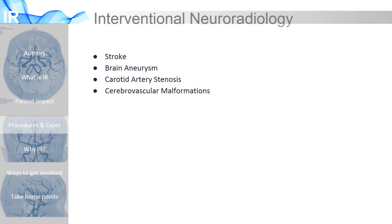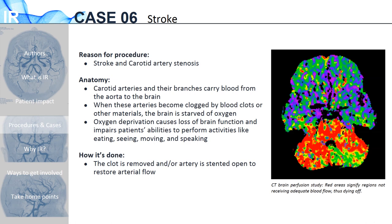IR also performs procedures related to the nervous system. Interventional neuroradiologists use the same techniques to solve problems in the vasculature of the brain, working on problems like strokes, brain aneurysms, blockages in major blood vessels, and vascular malformations. IRs commonly treat strokes. In patients without stroke, carotid arteries carry blood from the aorta to the brain without any problems. But in one type of stroke, one or more of these vessels becomes clogged, causing the brain to lose a portion of its blood supply and oxygen — this is called carotid artery stenosis. To treat these strokes, the clots can be removed and flow restored by either taking out the clot or injecting a clot-busting drug directly into the site of the clot.